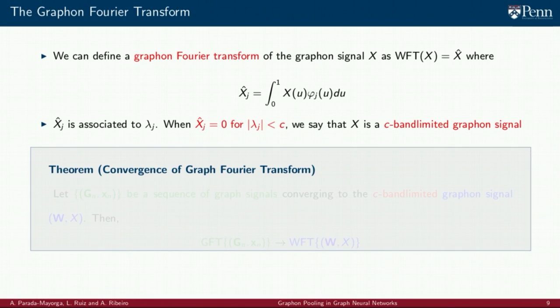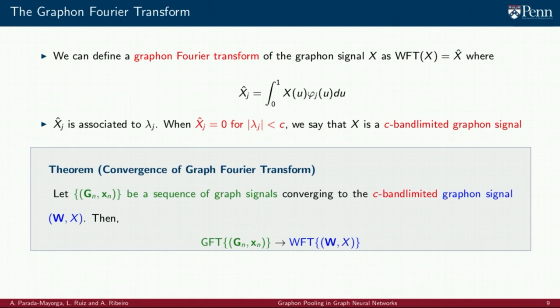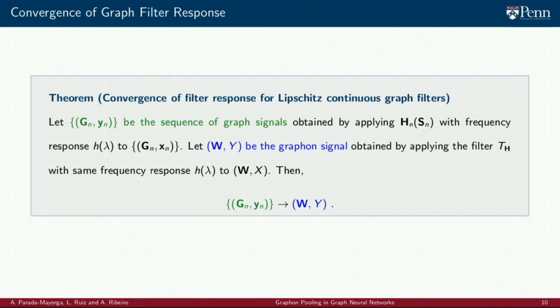As expected, graph signals and graphon signals are also related in the spectral domain. In particular, if we consider the graph-Fourier transform of sequences of graph signals that converge to a given graphon signal, we can show that they converge to the graphon-Fourier transform of the limit. And this notion of convergence extends also when considering filters on the spectral domain. This is, if a sequence of graph signals is filtered by a filter h of lambda defined on the general spectral axis, their limit converges to the filtered version of the graphon limit signal.